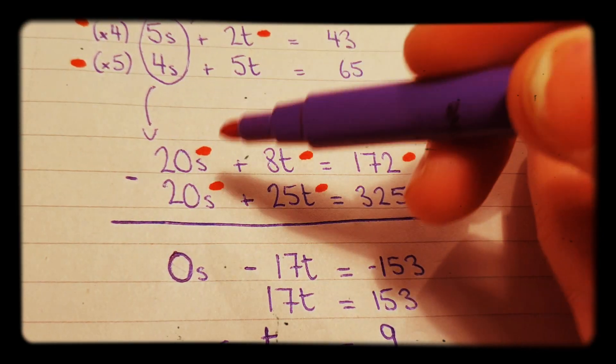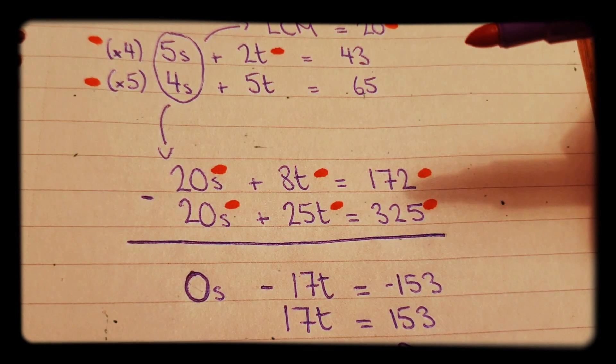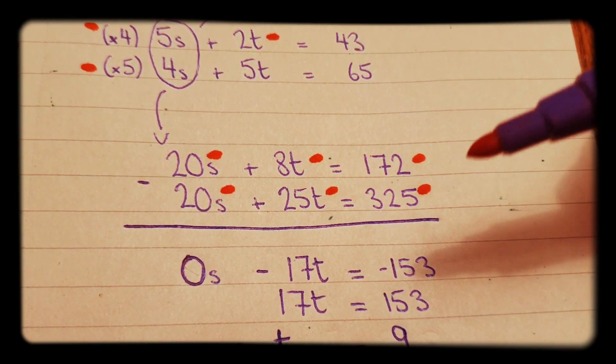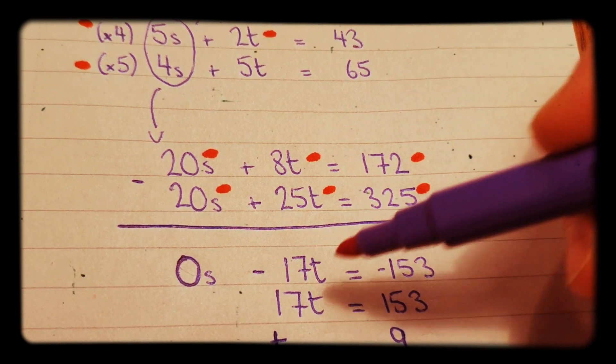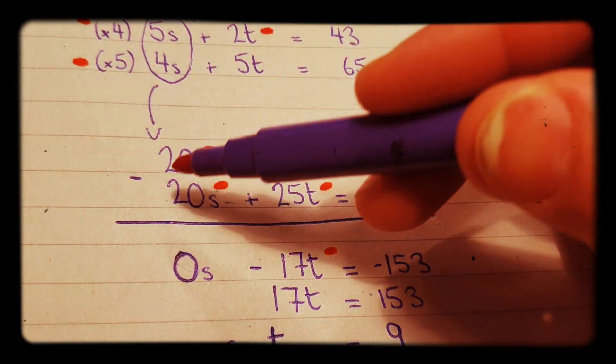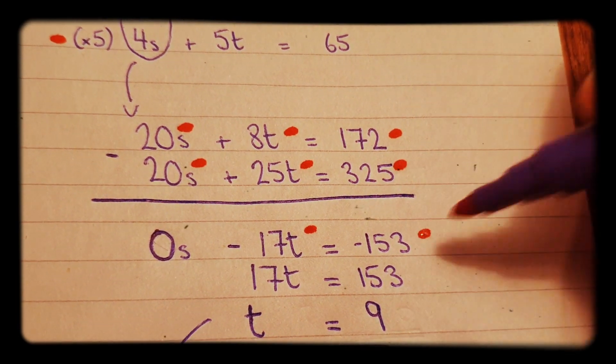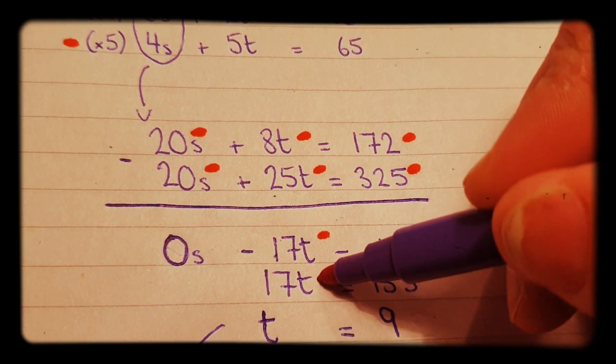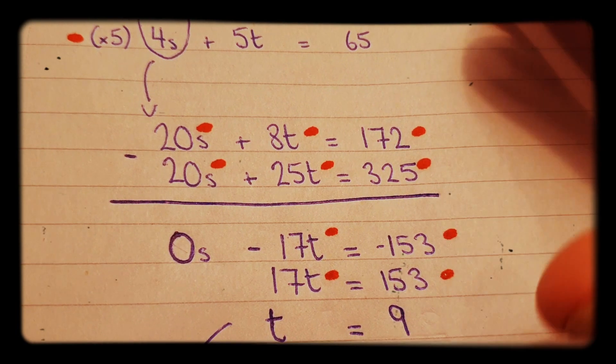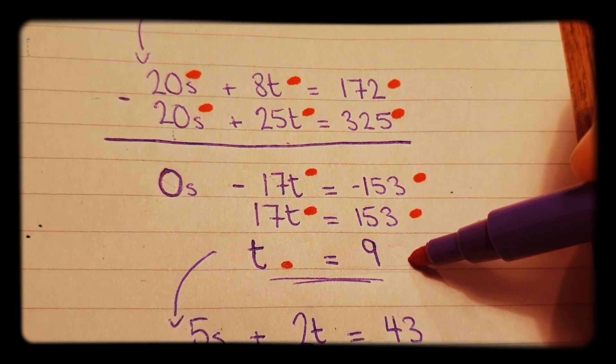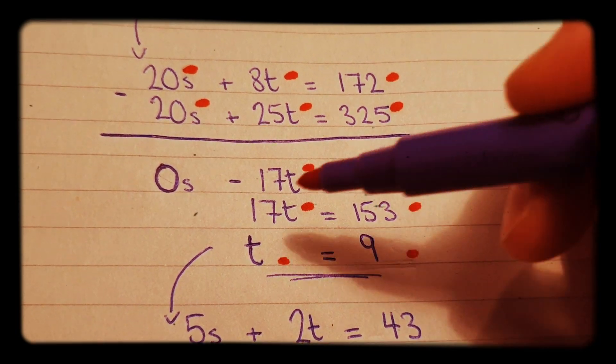When we minus them now, because we can, we have two 20s on line 1 and 2. If we minus them now, we'll get 0s and then we'll get minus 17t because 8 minus 25 is minus 17, equals minus 153, which is the same as 17t equals 153. Then we will get t equals 9 because we'll divide 153 by 17.